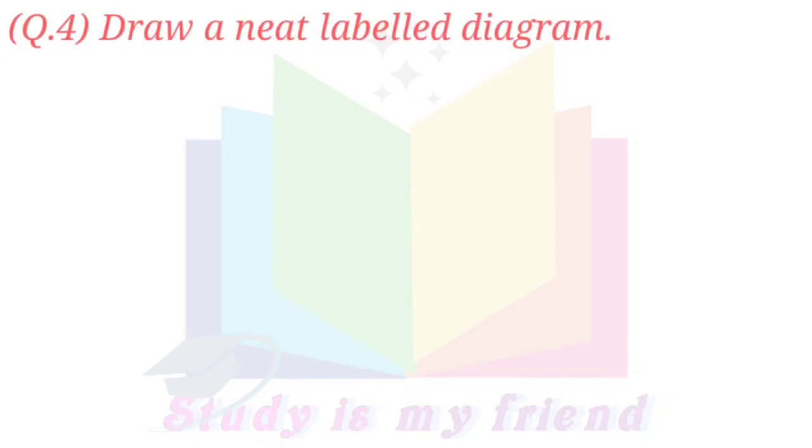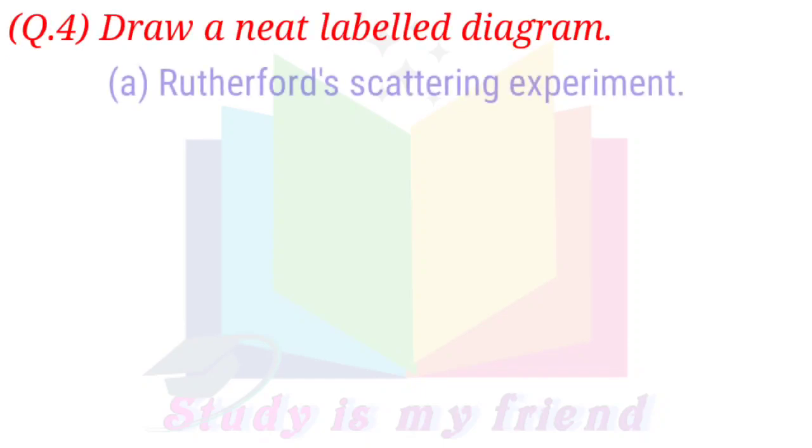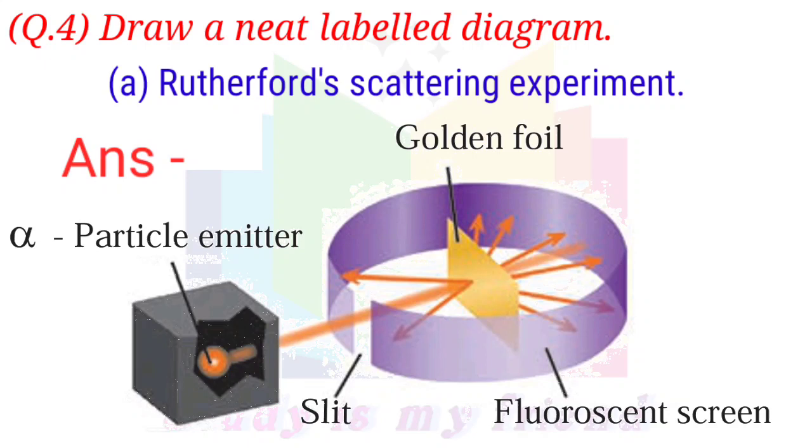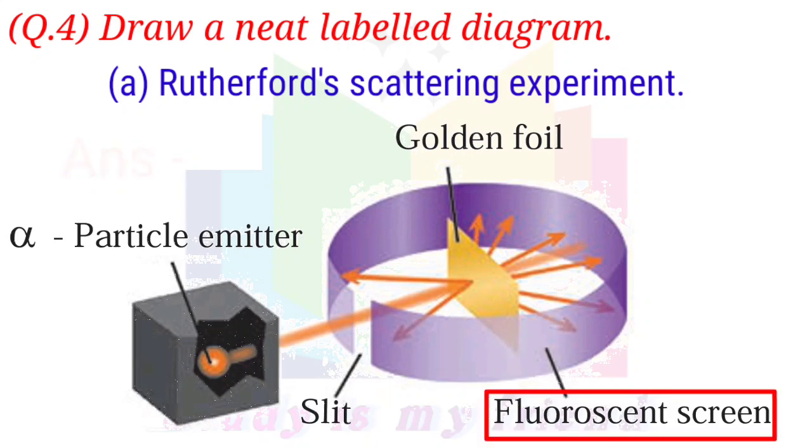Question 4: Draw a neat labeled diagram. Part A: Rutherford Scattering Experiment. Answer: Gold foil, alpha particle emitter, zinc fluorescent screen.